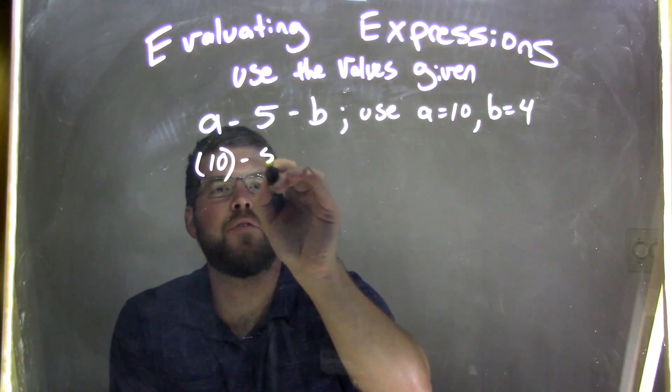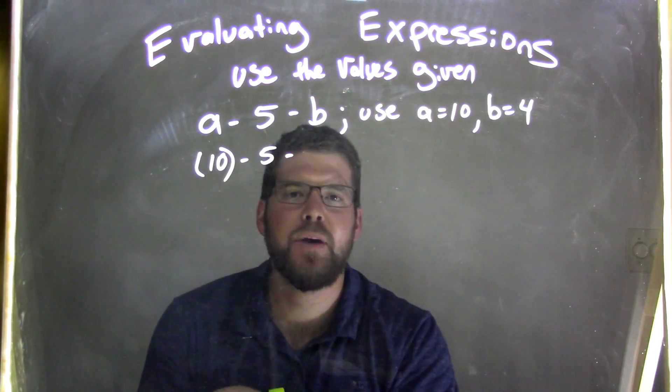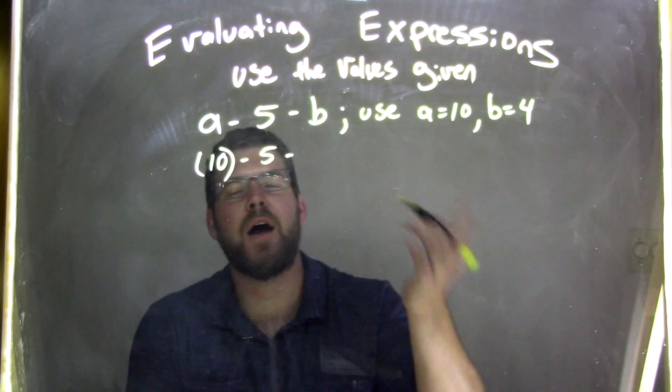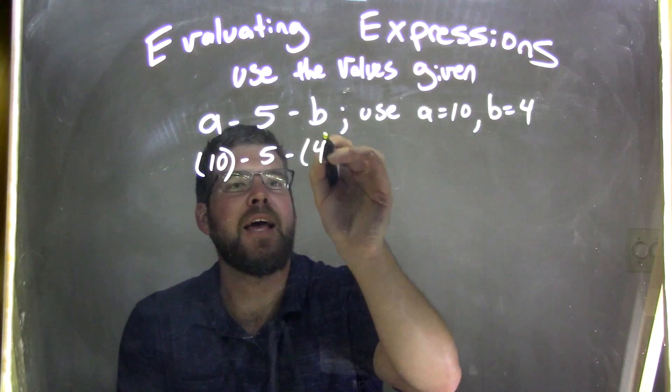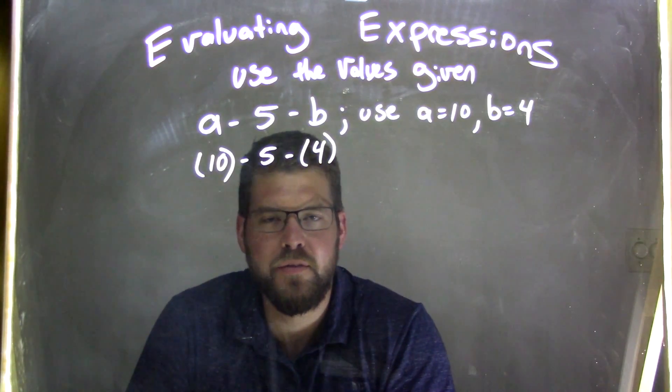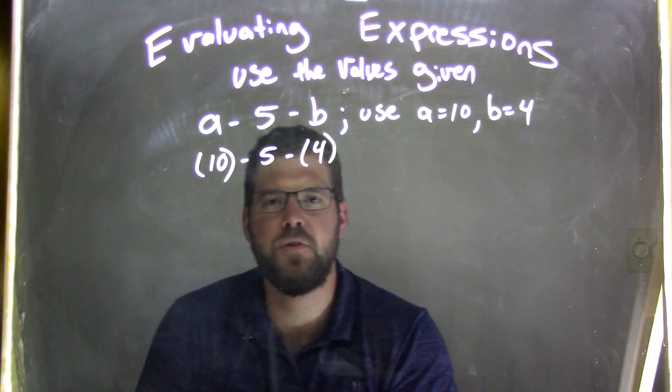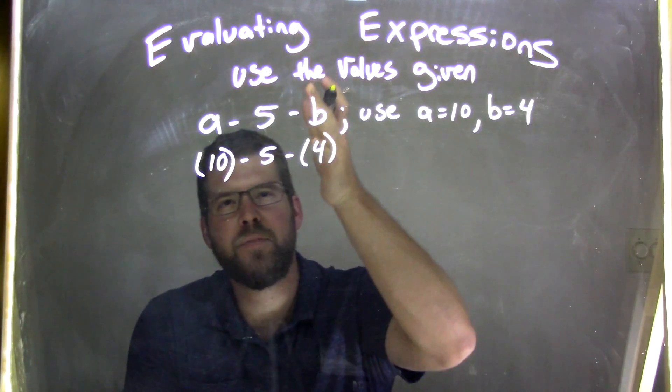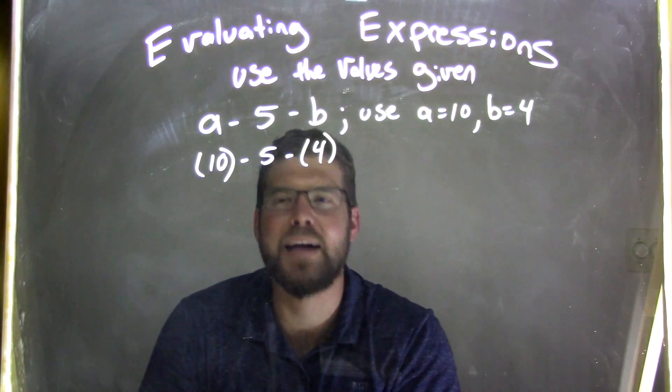So there it is, minus 5, minus, and then B becomes 4. So wherever I see a B, I replace it with 4. And again, I always use parentheses. Use your parentheses whenever you substitute in, so you know that you just substituted that variable in. It's a good practice.